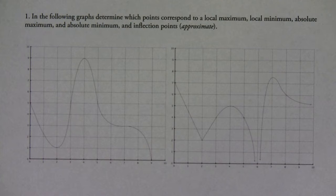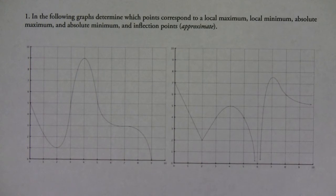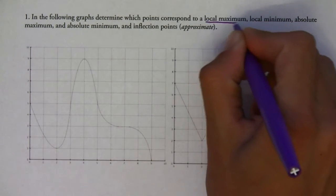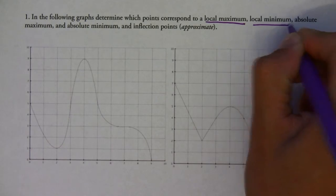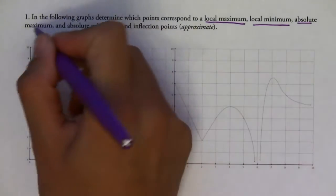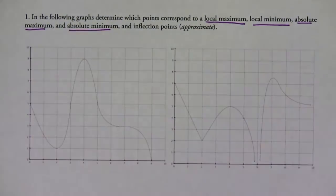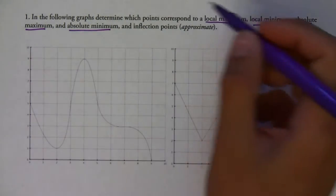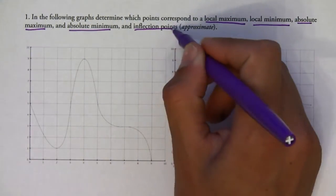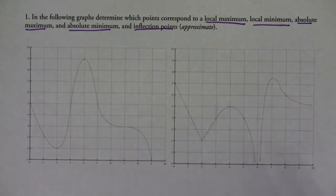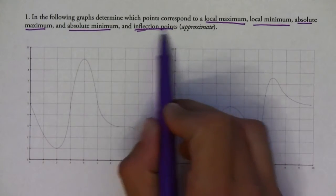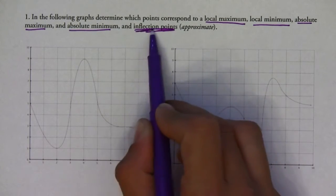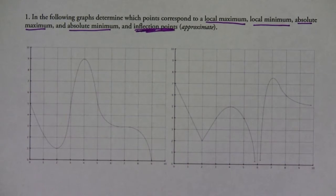This first problem is asking us to label which points correspond to a local maximum, local minimum, the absolute maximum, the absolute minimum, and the inflection points. Remember, inflection points are kind of hard to spot exactly when you look at a graph, but we could say approximately where they are.